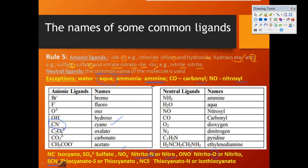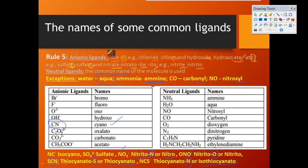Another type of ligand is thiocyanate, where sulfur is included with cyanide. If written as SCN⁻, it is called thiocyanate, with sulfur as the coordinating atom to the metal. If written as NCS⁻, it is called isothiocyanate, where the nitrogen atom is coordinated with the metal.